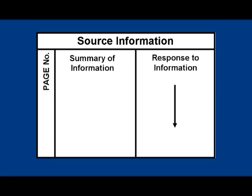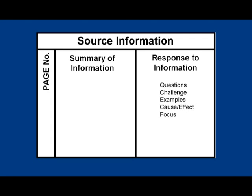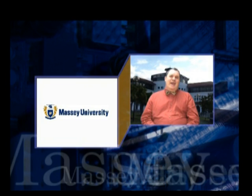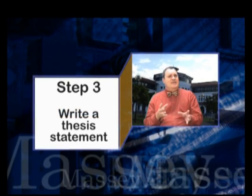In the third column of your notes, you will put your response to what the author is saying — how you react to the source material. One way of responding is to ask questions, challenge old beliefs, create examples, think about cause and effect, apply this to your own focus, and make connections between this source and others you have read. Another way to respond is to evaluate it — what are the strengths and weaknesses of the source material? If you take time to make good summary response notes, writing your first draft later will be much easier. Now we are ready to go on to Step 3: figuring out your thesis statement.